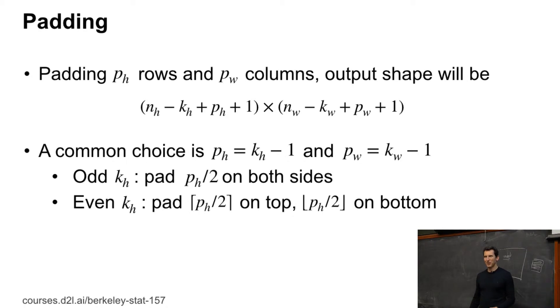If I have a 5 by 5 kernel, I need two pixels on either side, and then things don't change shape.